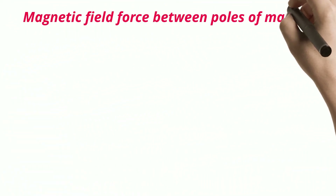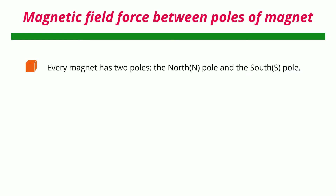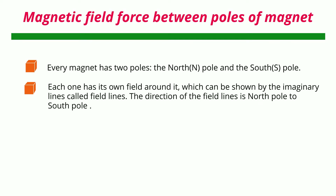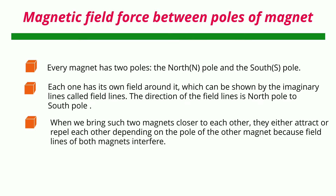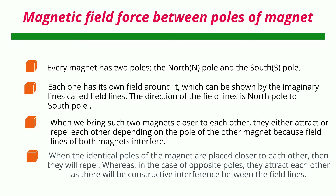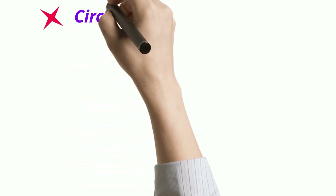Every magnet has two poles — the north (N) pole and the south (S) pole — each with its own field, shown by imaginary field lines running from north to south. When two magnets are brought closer, they either attract or repel depending on which poles face each other, because the field lines of both magnets interfere. Identical poles repel each other, while opposite poles attract due to constructive interference between the field lines.